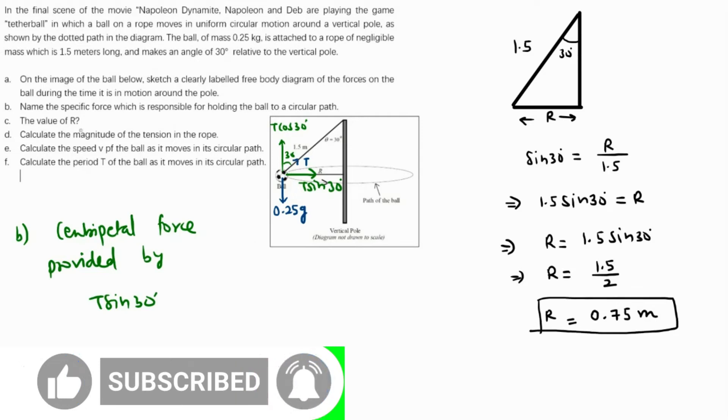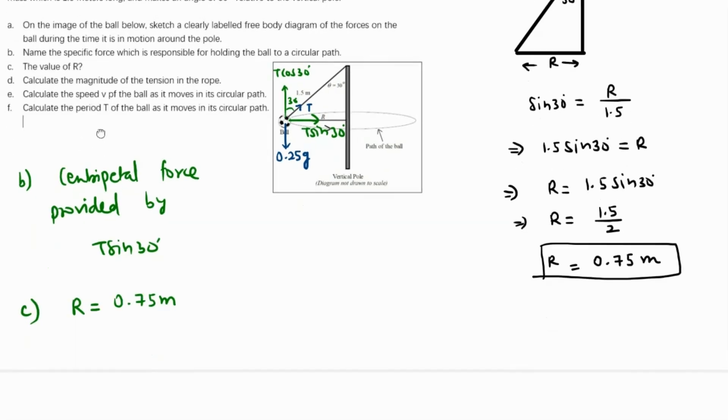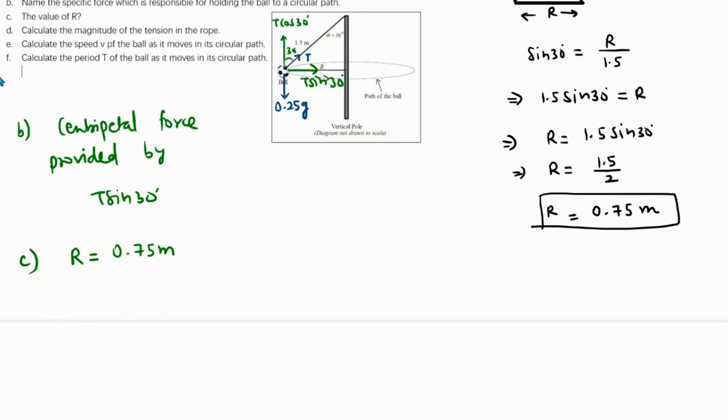R is 0.75 meters. Now calculate the magnitude of the tension of the rope and the speed of the ball. We write the equation of motion. The vertical forces should be equal so T cos 30 equals mg, and the horizontal force T sine 30 equals mv squared over R.